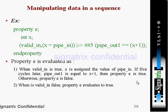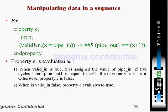When 'valid_in' is false, the property evaluates to true. This is an important point. When this expression will hold: if 'valid_in' is equal to zero, meaning it is false, then the property is still true. If 'valid_in' is true, then it must satisfy the specified condition.